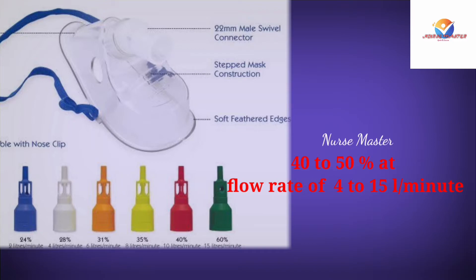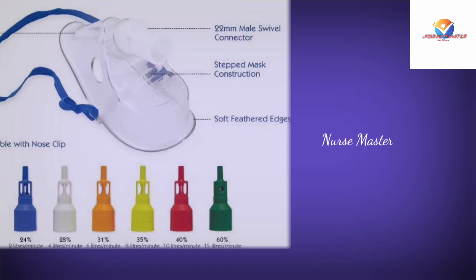Venturi masks deliver controlled percentages of oxygen at flow rates of 4 to 15 liters per minute. Different colors deliver different rates: blue delivers 24% at 2–4 L/min; white delivers 28% at 4–6 L/min; yellow delivers 35% at 8–10 L/min; orange delivers 31% at 6–8 L/min; red delivers 40% at 10–12 L/min; green delivers 60% at 12–15 L/min.